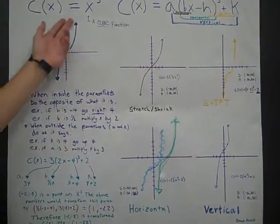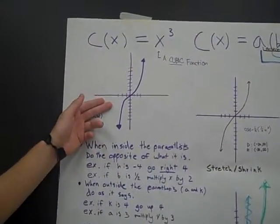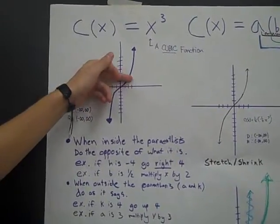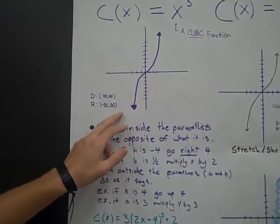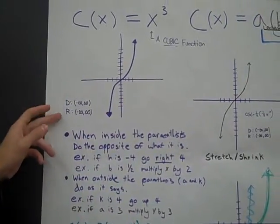Our function is the cubic function that showed on that graph. Its zero point passes through the origin, it flattens out in the middle, and it extends from negative infinity to infinity in both the domain and the range.